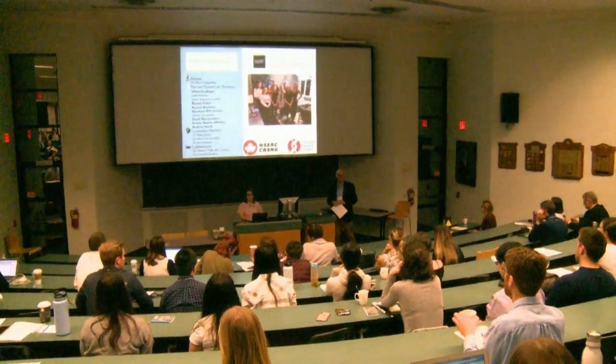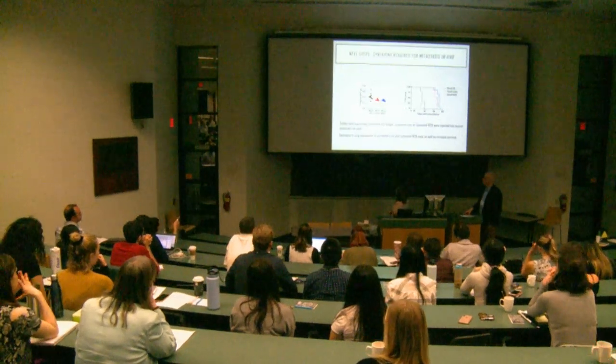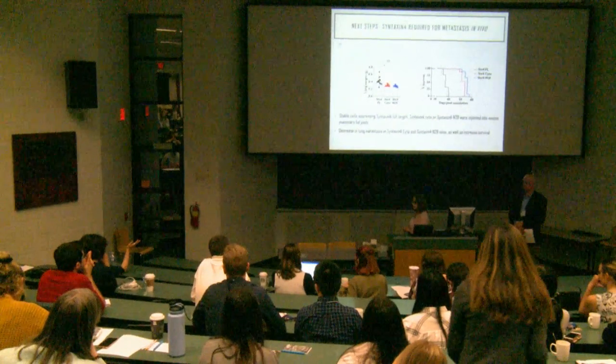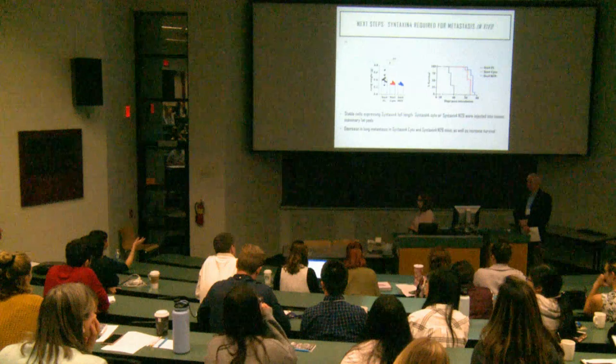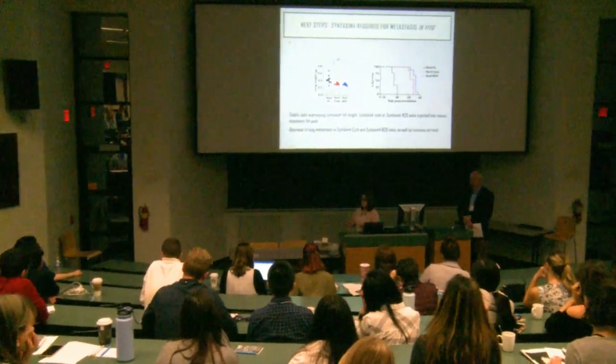During the Q&A, a question arose about why the mice are still dying even when the SNARE complex is disrupted. The speaker noted there are multiple SNAREs including VAMP-7, which has also been shown to be required for invadipodia formation. There could be redundancy — because Syntaxin-4 complex formation is inhibited, other SNARE complexes may compensate, or cells could be using a different method of metastasizing.